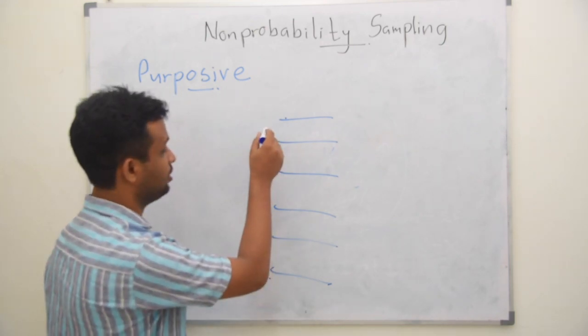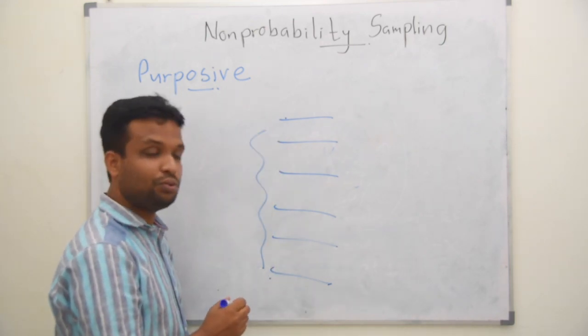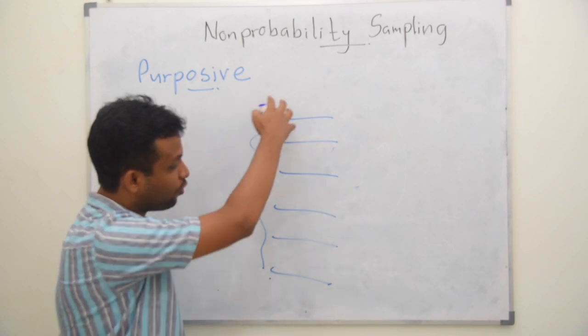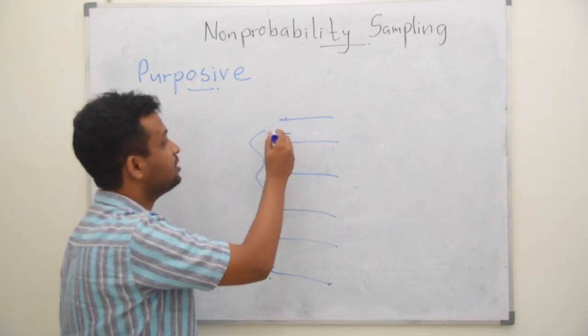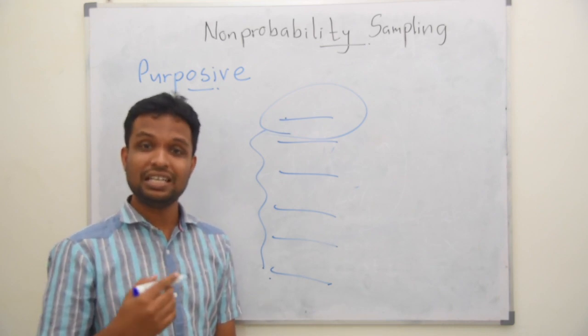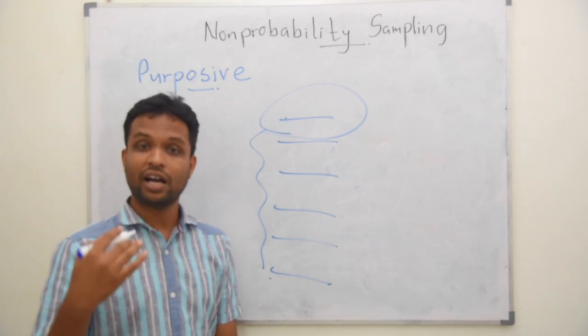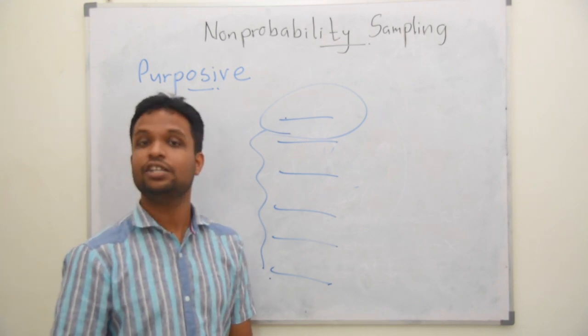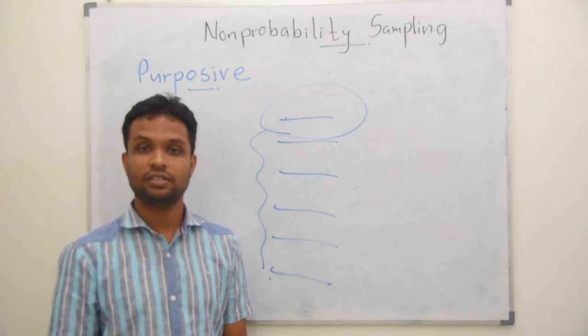In such case, you don't want to do a random process of all the class. You just select the extreme cases, those who are really good in mathematics, those who have higher marks in mathematics for your research. And you can conduct your research.